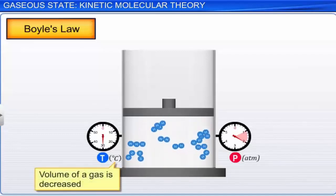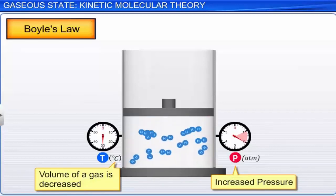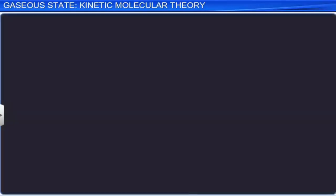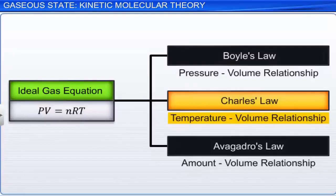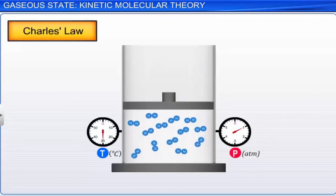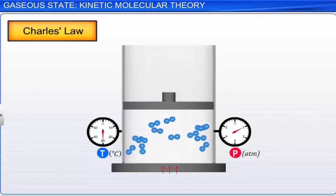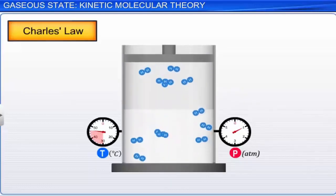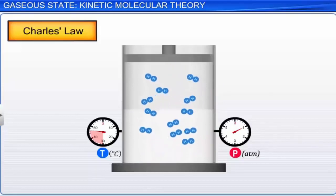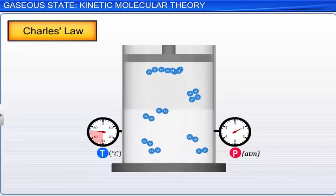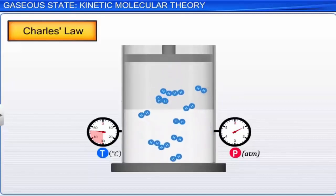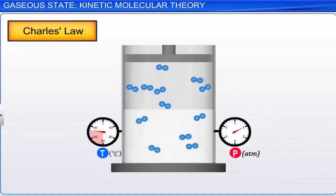Next let's look at Charles' law. Consider a given amount of gas at normal atmospheric pressure enclosed in a cylinder fitted with a frictionless piston. When it is heated, according to kinetic molecular theory, the average kinetic energy of the molecules increases, then molecular velocities increase, thereby increasing the number of collisions with the walls as well as the momentum of each molecule. As a result, the piston is pushed outwards and the volume of the gas increases. Hence, at constant pressure, when the temperature of a given mass of gas is increased, its volume increases. This is Charles' law.